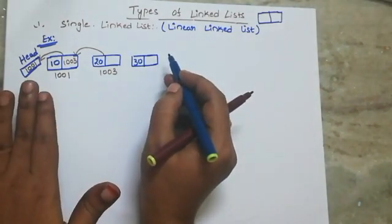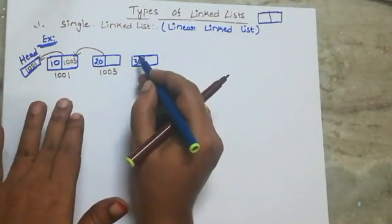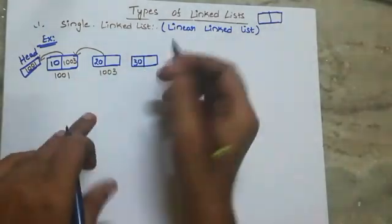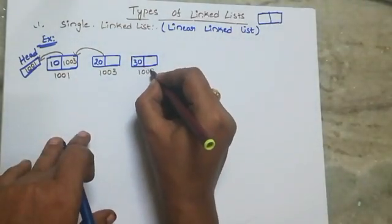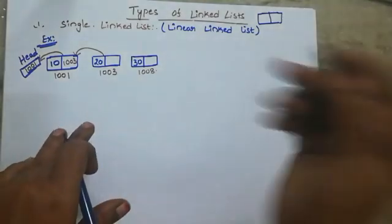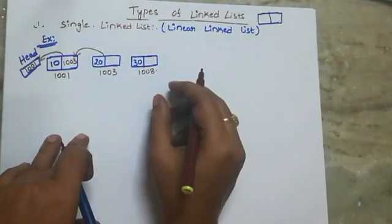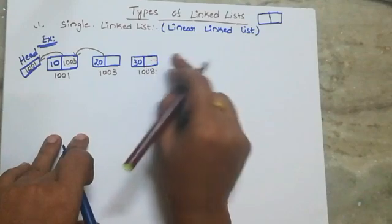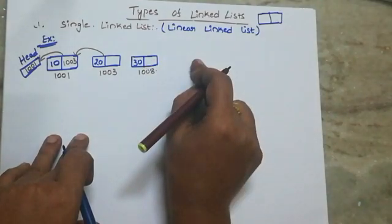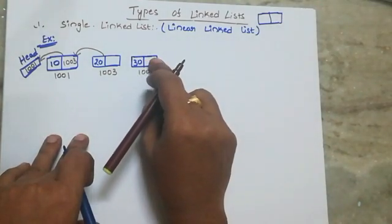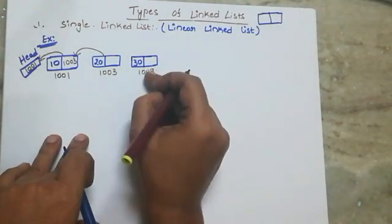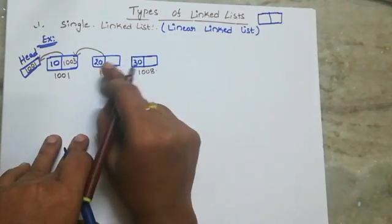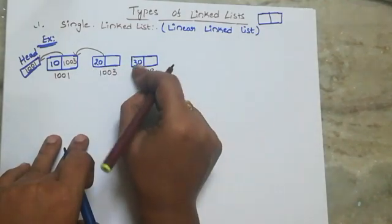We will do the link up. If we create another node — that is node 30 — for example at address 1008, we will store it. The address is 1008 and I will place this data, connecting it with node 2. Now I will connect with node 2 and store the address.